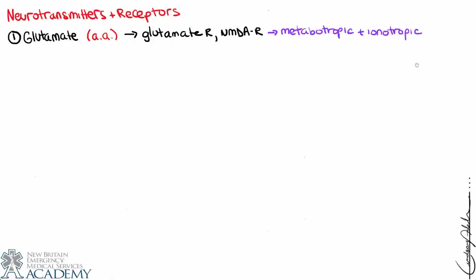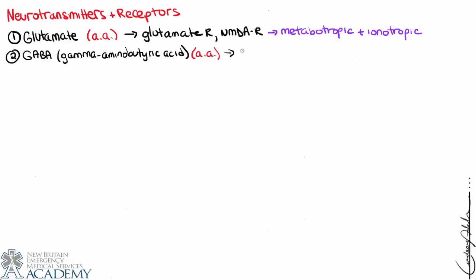Next is GABA — gamma-aminobutyric acid — also an amino acid, though not one of the standard 20. There are two types of GABA receptors: GABA-A, which is ionotropic and associated with chloride channels, and GABA-B, which is metabotropic. We won't focus heavily on GABA-B in this class.